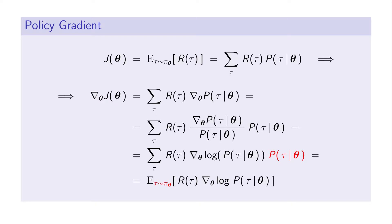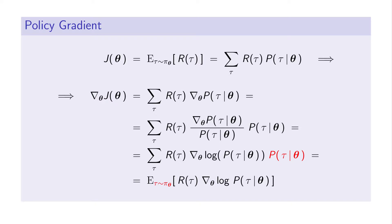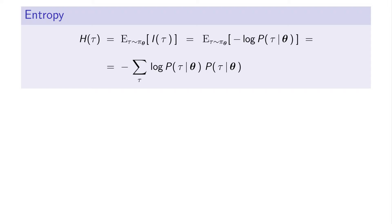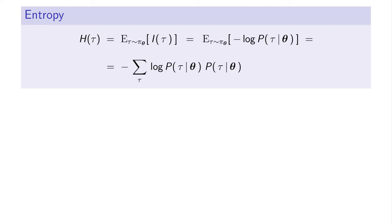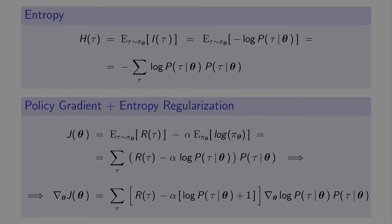Entropy regularization is what I consider an awesome way to overcome this problem. Entropy is defined as the expected value of the information carried by a random variable, and the key thing to know is that entropy is maximum when all outcomes of a random variable occur with the same probability. By adding the entropic term in the reward function, we are penalizing policies that produce trajectories that are too likely or, contrarily, too improbable — and that increases exploration and produces the results that you are about to see.